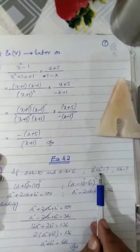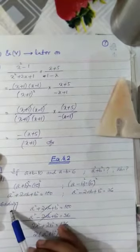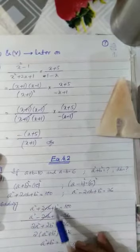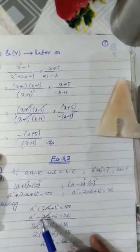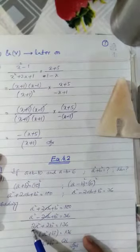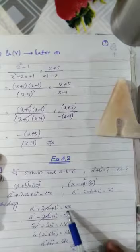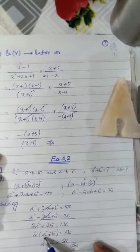Now girls, for getting the value of a² + b², we have to add these two results. So when you are adding these two results, +2ab and -2ab cancel out. Here you will get a² + a² = 2a², b² + b² = 2b², and here 136.